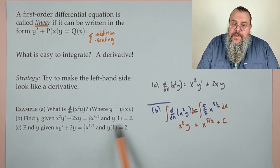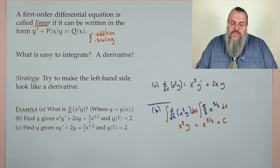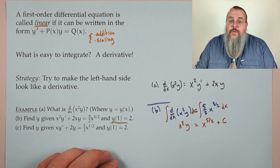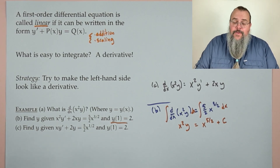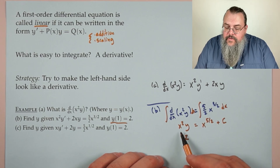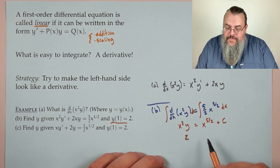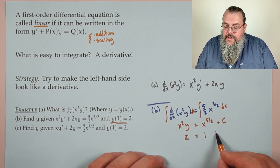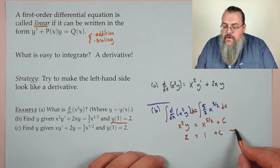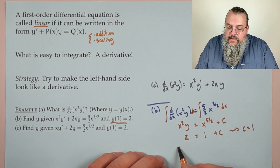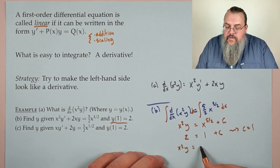We plug in the initial condition y(1) = 2: so 1² · 2 = 1^(5/2) + c, giving 2 = 1 + c, so c = 1. Therefore x²y = x^(5/2) + 1.